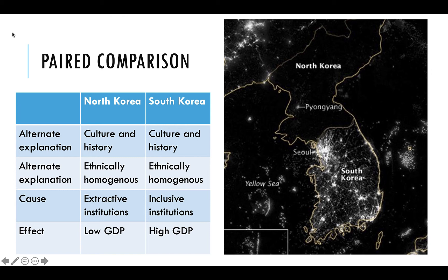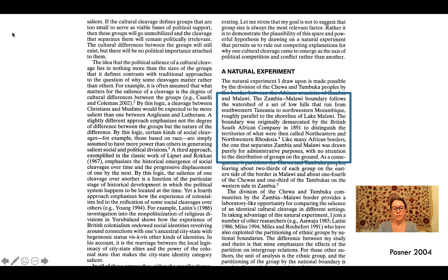It's difficult to find two countries or cases that are truly identical, which is why we often use other ways to draw conclusions about cause and effect. The difference between a paired comparison and a natural experiment is that we have reason to believe the way people or borders were assigned was truly random or arbitrary.